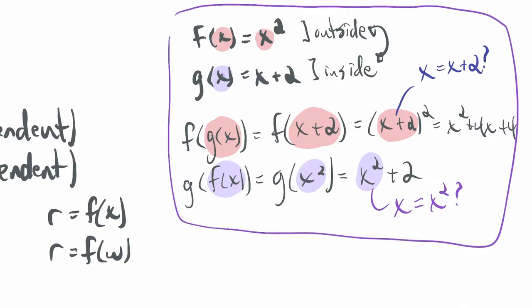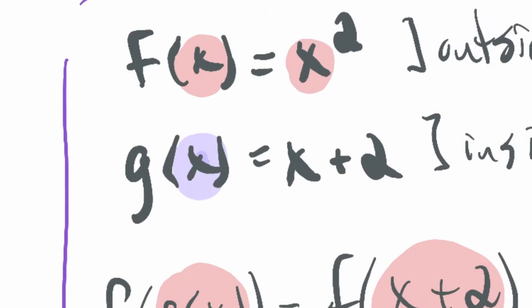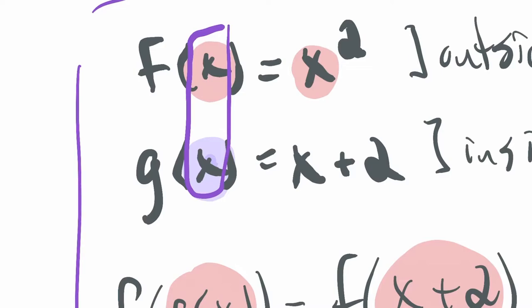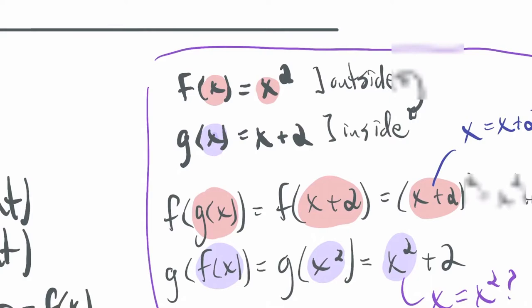This can be very confusing when we use x as the input variable for two different functions, because these two x's are not the same variable — we're merely using the same letter. You can say f of two and g of three; it's not like both have to be the same number just because they both use x.